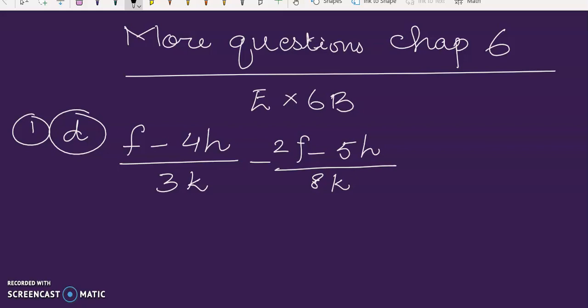You have already done this, so it must be very easy for you. We are going to take its LCM. K is present in both of the fractions, so we write K in the denominator. Now, 3 and 8, these both are different numbers, so when we take its LCM.